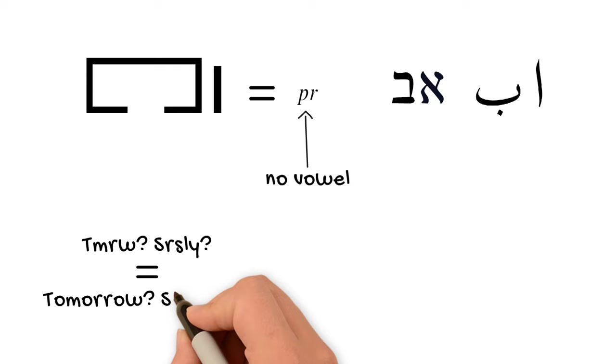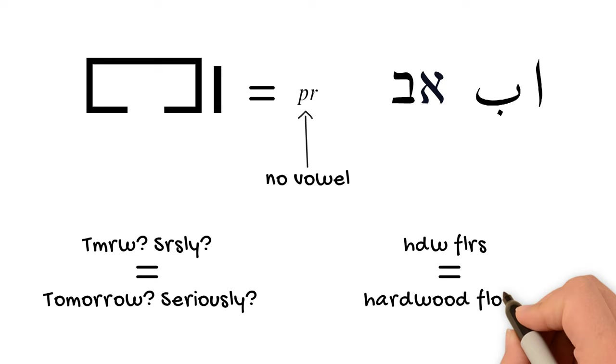So for example, if you see this, you know that this means tomorrow? Seriously? And even if you haven't done this, maybe in the past, if you were apartment hunting back when you needed to do that in a newspaper where space was limited, and you saw an apartment described with this phrase, HDW FLRS, you would know that that apartment had hardwood floors.